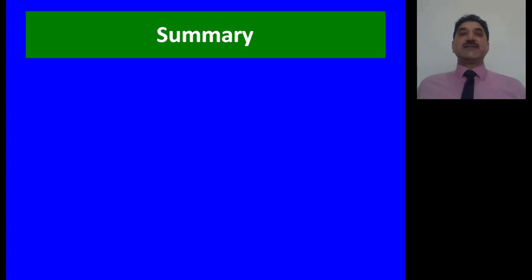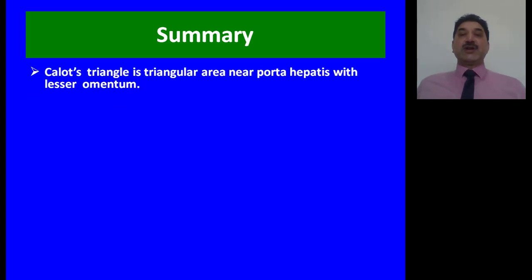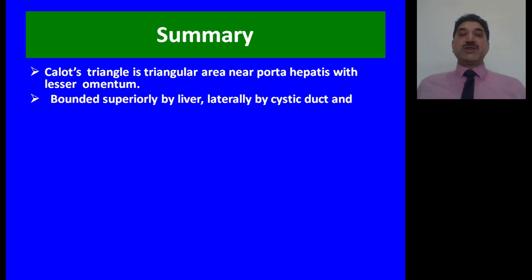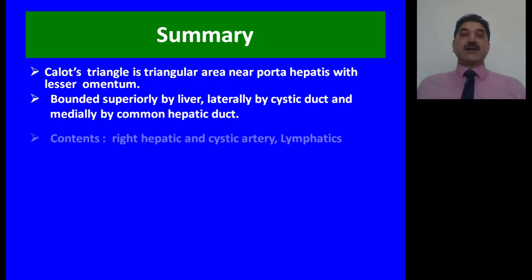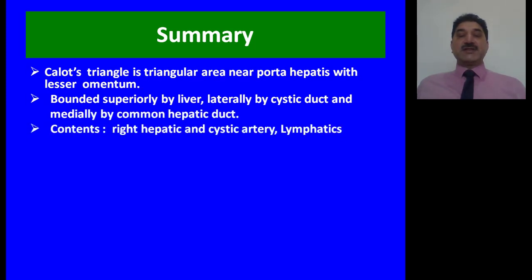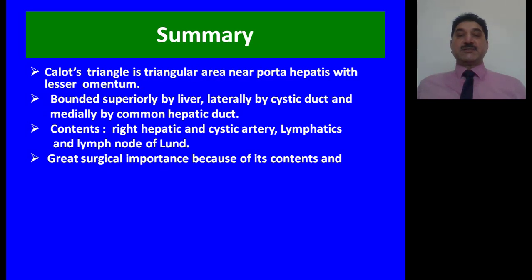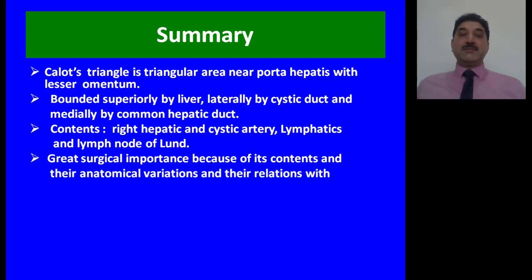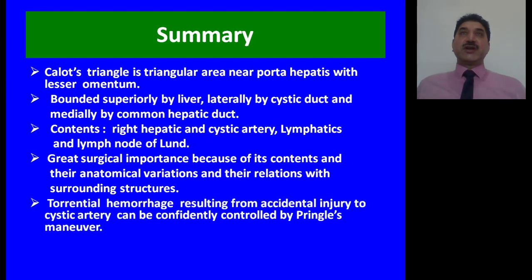To summarize: Calot's triangle is a triangular area near the porta hepatis within the lesser omentum. It is bounded superiorly by the liver, laterally by the cystic duct, and medially by the common hepatic duct. Its usual contents are the right hepatic and cystic arteries, lymphatics, and the lymph node of Lund. It is of great surgical importance because of its contents and their anatomical variations, and also because of its relations with surrounding structures like the posteriorly located inferior vena cava. Torrential hemorrhage from accidental injury to the cystic artery can be confidently controlled by Pringle's maneuver.